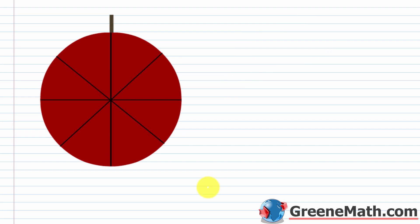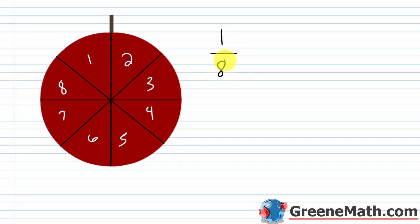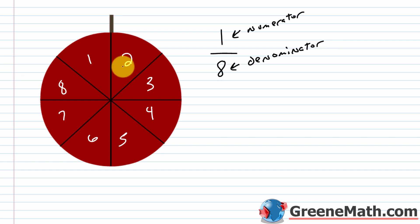Now let's suppose that as we're about to bite into the apple, six more people show up and they each want an equal amount. So now we've got to cut up the apple into eight equal pieces. Each person would get one piece out of a total of eight equal pieces — the fraction one eighth. So one is the numerator and eight is the denominator, meaning each person gets one eighth or one piece out of a total of eight equal pieces.